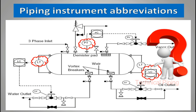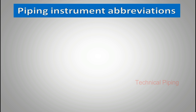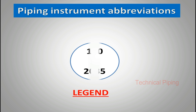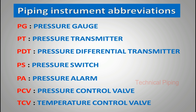First we see a sample of abbreviations and symbols mentioned in the P&ID diagram. In this symbol, the first part — 110 — denotes the area code, meaning the instrument location area. 2035 denotes the tag number of the instrument, and the letters PI denote the identification code. Now we see the abbreviations of the most common piping instruments used in major projects.